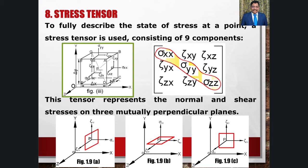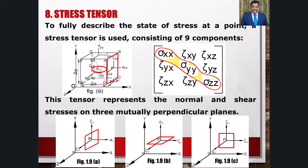एक elemental volume delta x, delta y, delta z को point P(x,y,z) के चारों ओर rectangular parallelepiped के रूप में isolate किया गया है। Positive x face ABCD point P से नहीं गुजरता है और stress के components वास्तव में point P(x + delta x/2, y, z) पर act करते हैं। हालांकि जैसे ही delta x → 0, P' और P की स्थान पर आते हैं और इसलिए infinitesimal volume element के लिए face ABCD को point P के थ्रू गुजरने वाला माना जा सकता है जैसा कि fig 1.9a में दिखाया गया है।